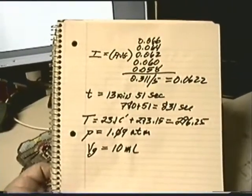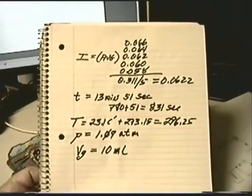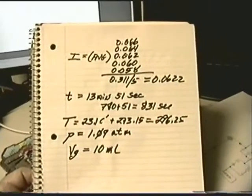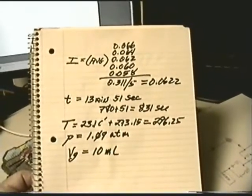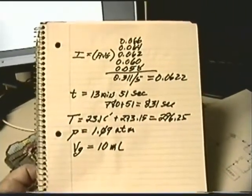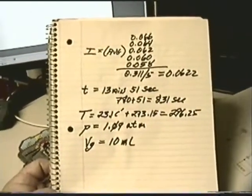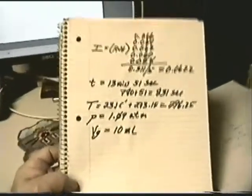The time of this run was 13 minutes 51 seconds for a total of 831 seconds. The temperature in Kelvin was 296.25 and the pressure was 1.09 atm for a volume of 10 milliliters. So run those numbers and see what you come up with.